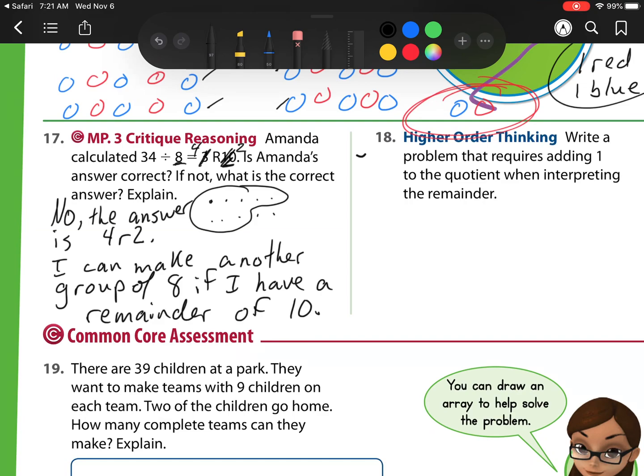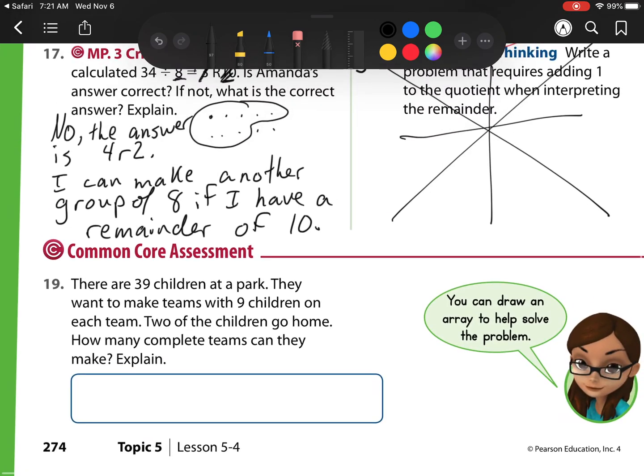Number 18, write one problem that requires adding 1 to the quotient when interpreting the remainder. So for this one, I'm going to say we can cross it out. And we'll come back to that in class. Because I think we'll have some questions on that one.